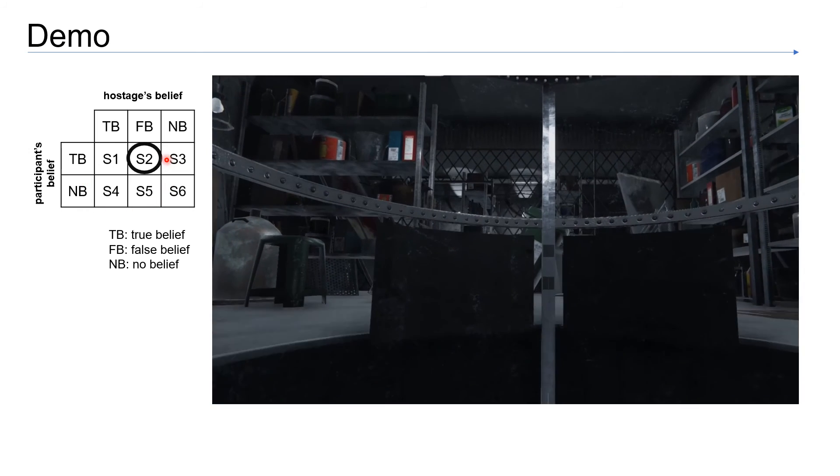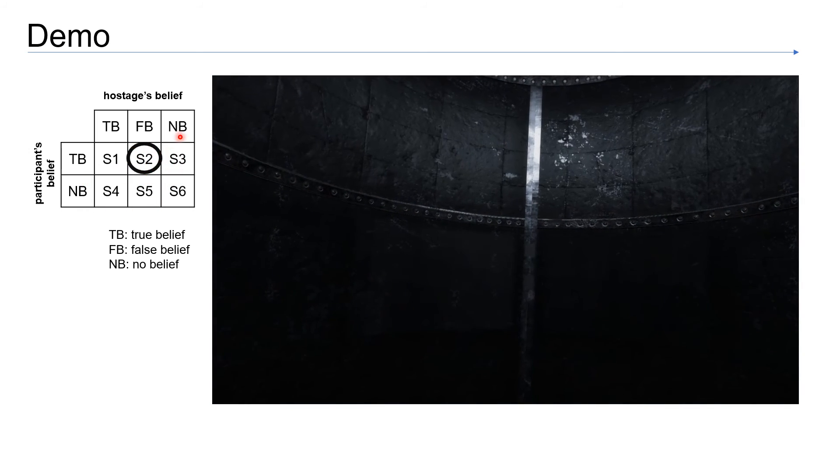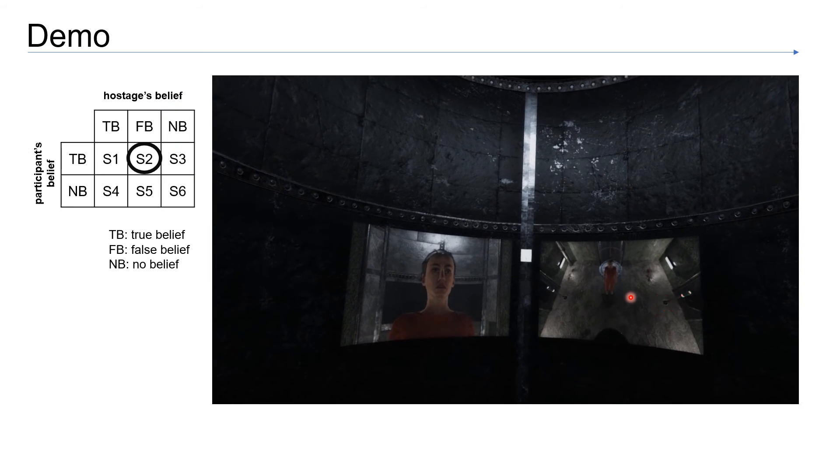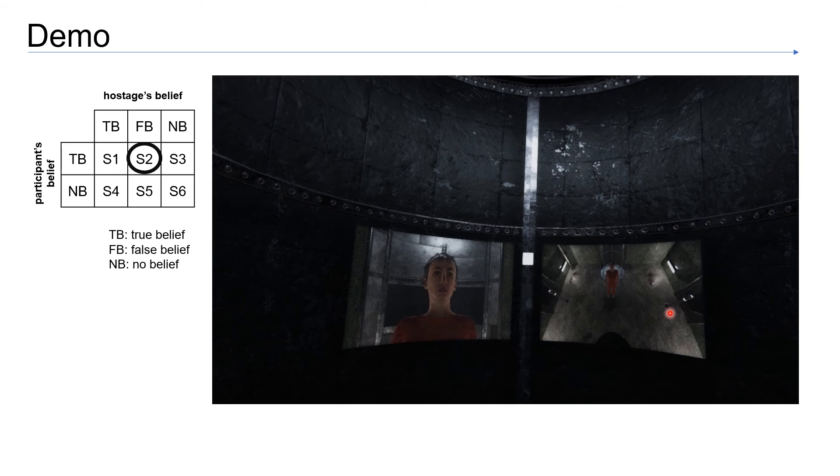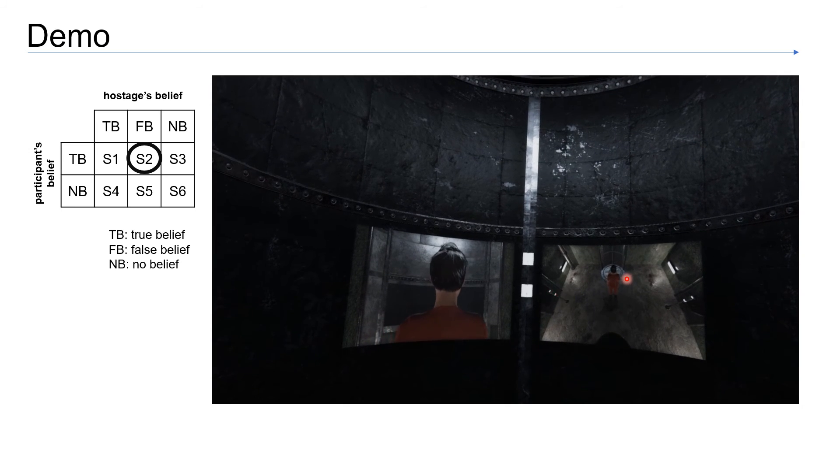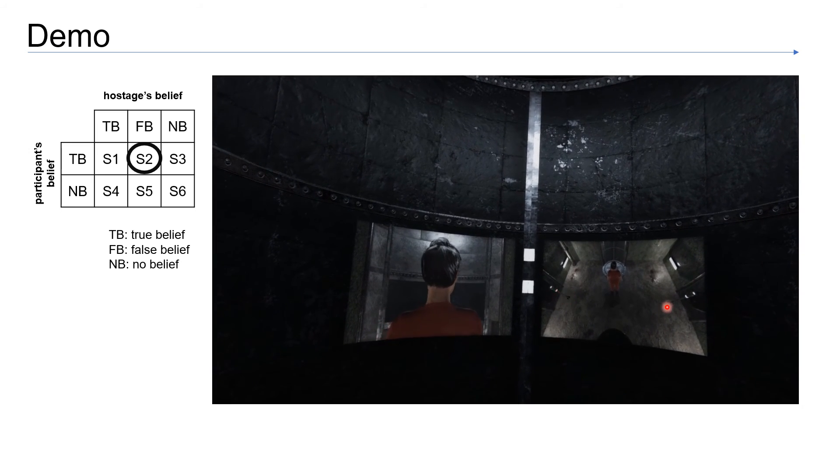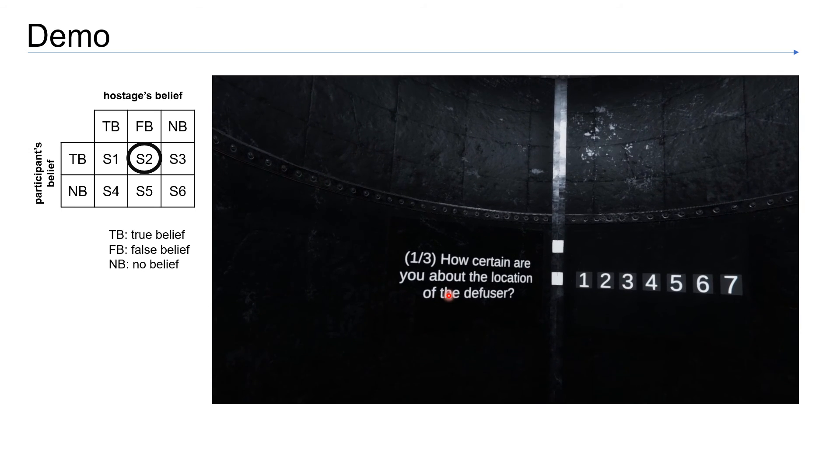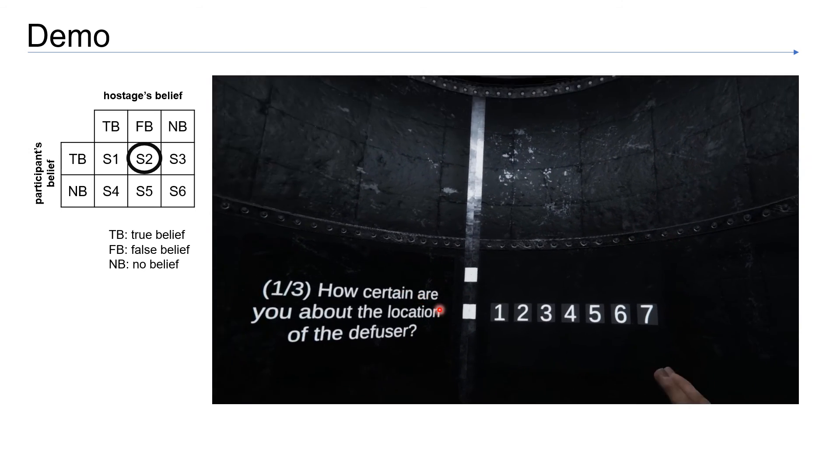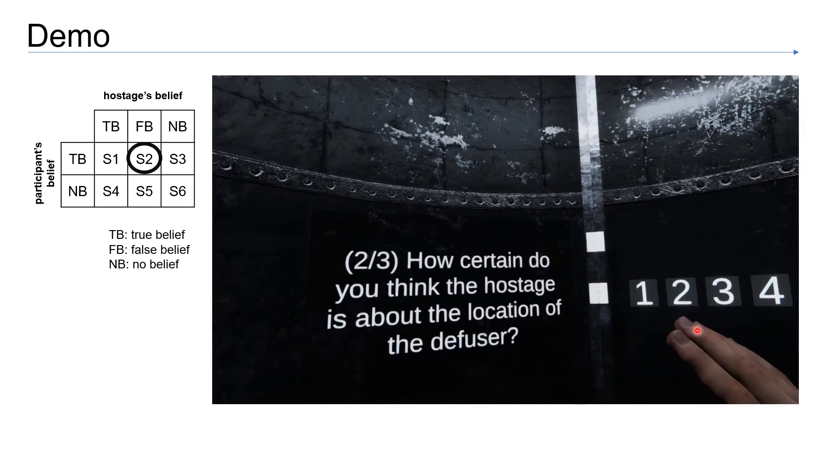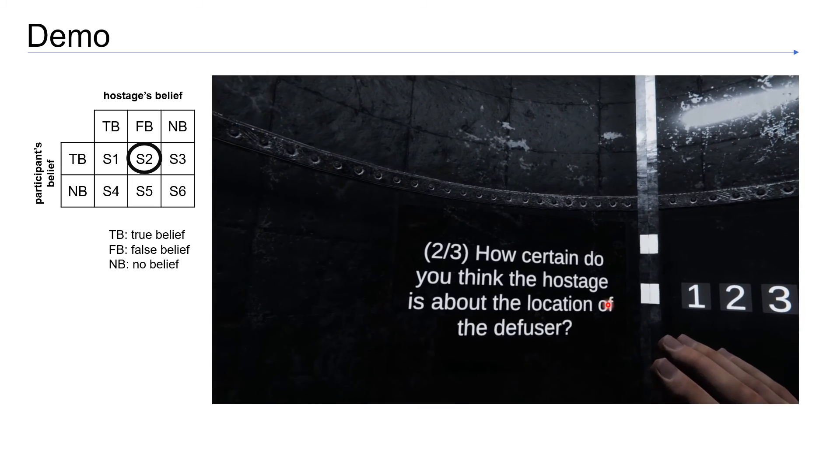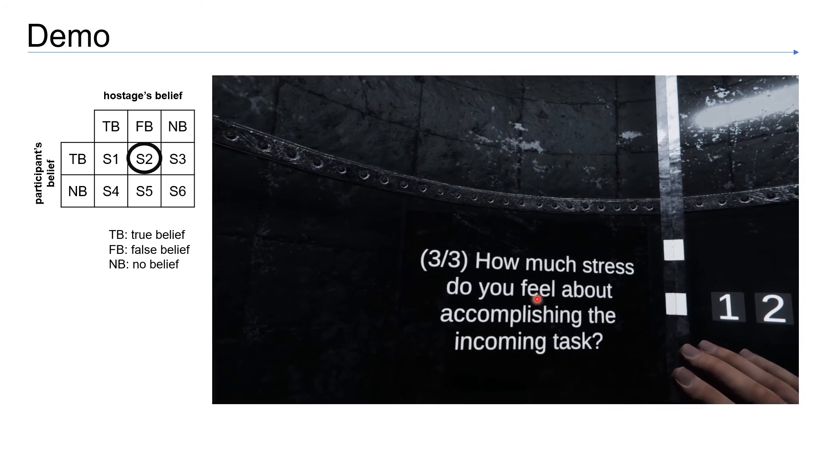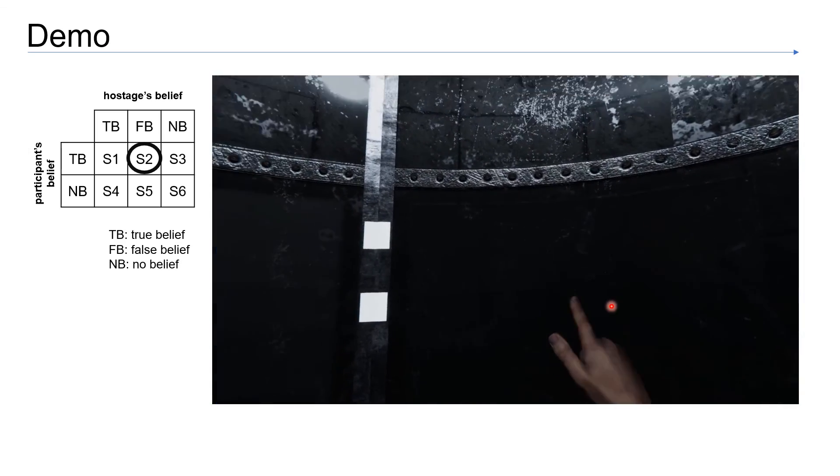The second scenario would mean that the participant has no belief because the hostage has a false belief. You can see that the hostage first saw the signal here, and then she turned her back to the room. The signal moved to this one, but she didn't know. Then again, the participant had to rate their confidence about this position. She was very confident, 7, for the hostage, maybe not, 4. The stress level increased a little bit.